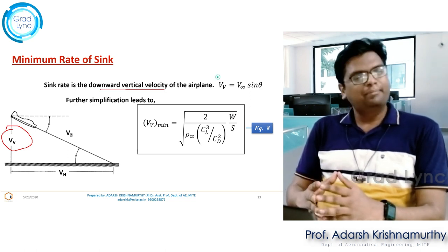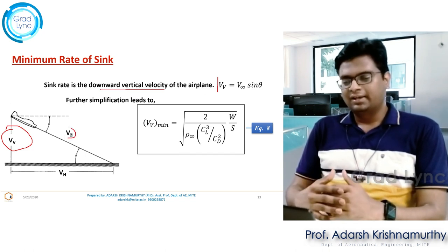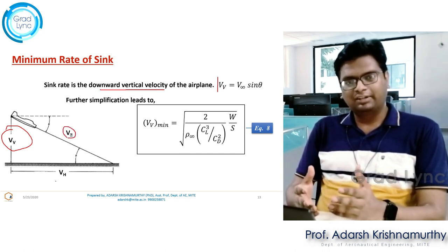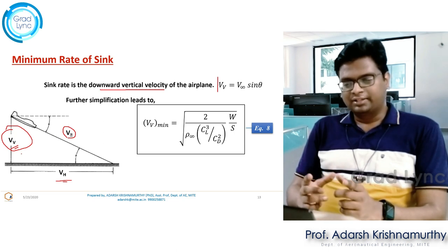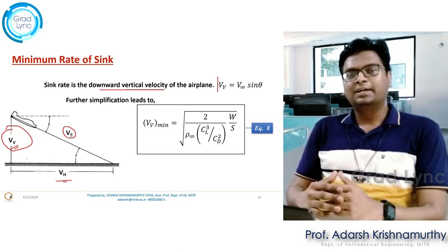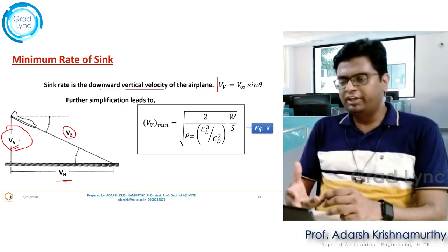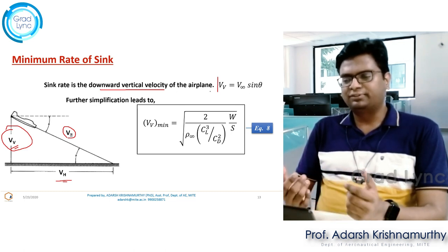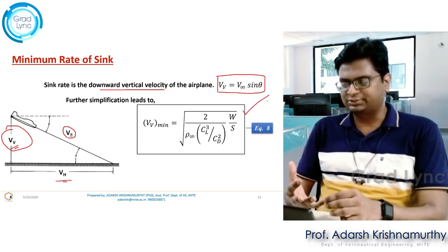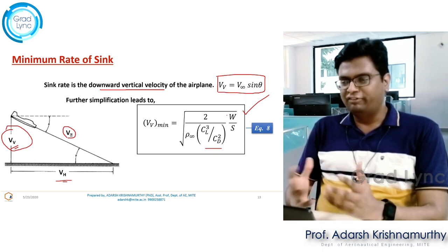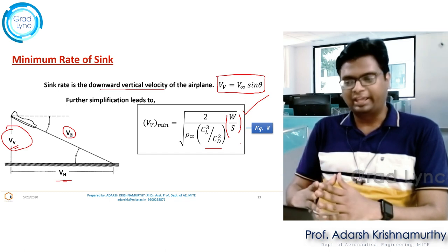If I redraw the same diagram where the equilibrium flight velocity is V-infinity, the horizontal and vertical velocities are the components of this equilibrium velocity V-infinity. The horizontal component is represented by Vh and the vertical component is represented by Vv — V-infinity into sine theta. I get the expression for rate of sink as: square root of (2 / ρ∞) into (CL³ / CD²) multiplied by wing loading. Wing loading is nothing but the ratio of weight of the aircraft to the platform area.